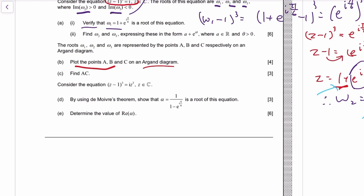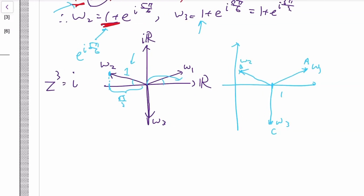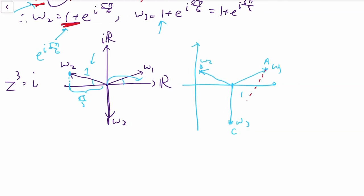And then the question is find AC for the length of AC. Well, that will be finding this distance, but that's the same as finding distance where this is one, this is one, and each angle is 120 degrees.